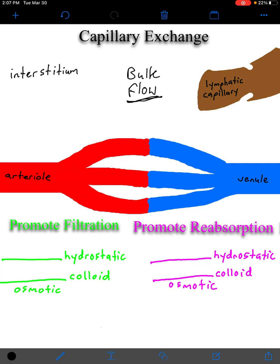Looking at the structures: in red we have an arterial end that gives rise to three branches of a capillary. We're going to focus on bulk flow and capillary exchange in branch number one — whatever happens in branch one will also occur in branches two and three. These arterial ends give rise to the venule ends of the capillary, which then convene to form a venule. There is also a lymphatic capillary shown in brown, which we'll get to later. All the surrounding tissue outside the blood vessel is called the interstitium, or interstitial space — all the open space outside of the cells.